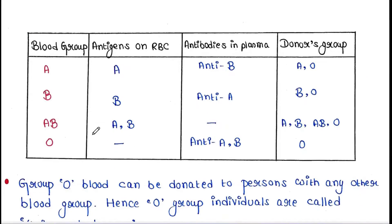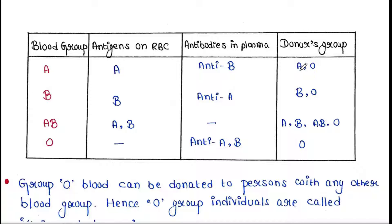We will see this chart. Blood group A contains A antigens and anti-B antibodies. The donors must have A blood group or O blood group.